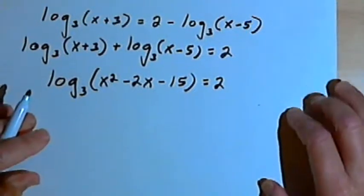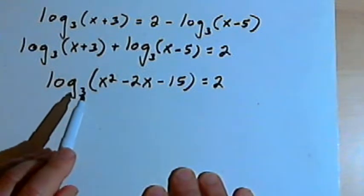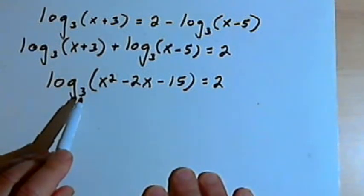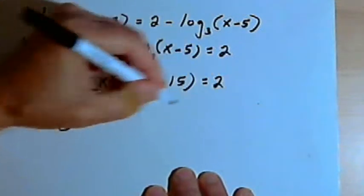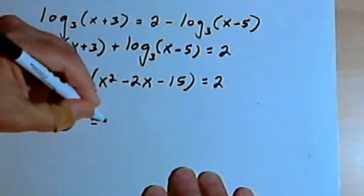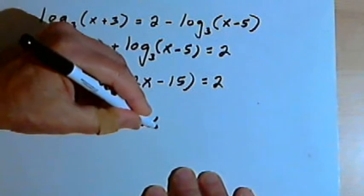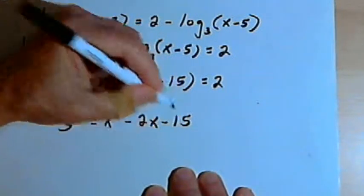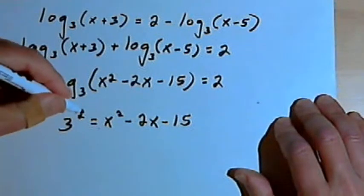Now this gets to be kind of like the first one we did. I'm going to take this logarithmic equation and convert it to exponential form. So the base is 3. I'm gonna have 3 raised to the second power equals x squared minus 2x minus 15. So 3 squared is 9.